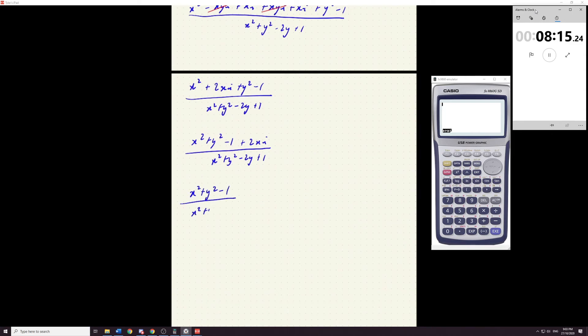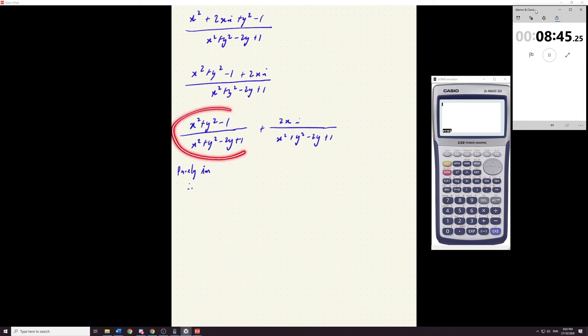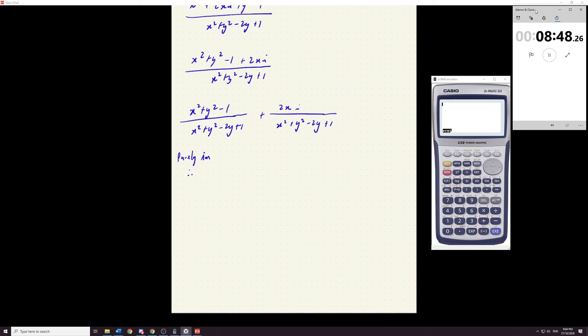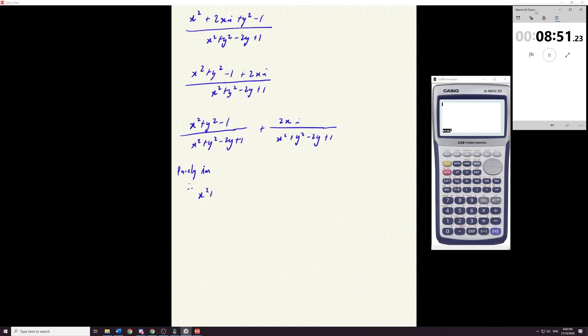All over like that. Plus. The imaginary parts. Two x. I know this looks worse. But it'll be okay. It is purely imaginary. Therefore. Purely imaginary. Therefore. That whole front section must be equal to zero.